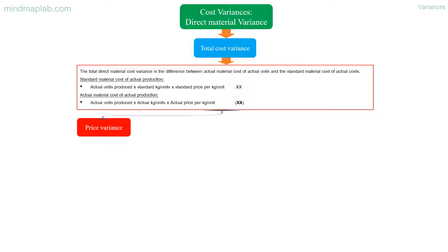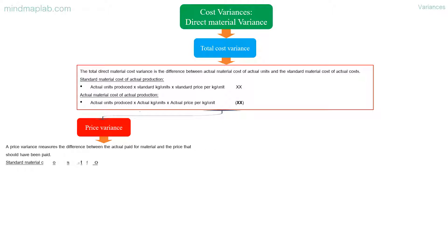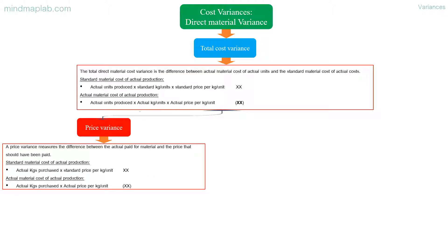Price variance: a price variance measures the difference between the actual price paid for material and the price that should have been paid. Standard material cost: actual kgs purchased multiplied by standard price per kg or unit. Actual material cost: actual kgs purchased multiplied by actual price per kg or unit.